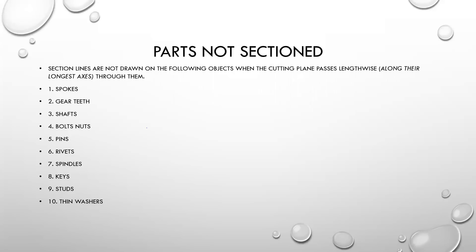Welcome to the continuation of our lecture and tutorials on assembly drawings. In this tutorial, we are going to be considering parts that should not be hatched or sectioned when we are making section views of assemblies.